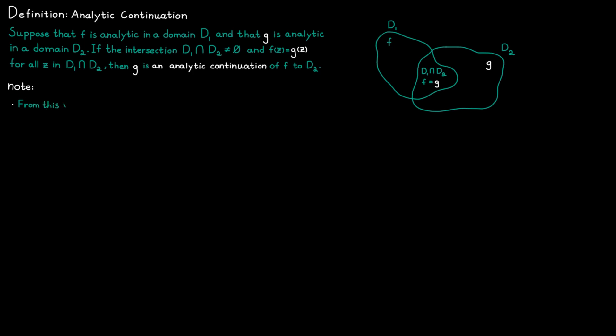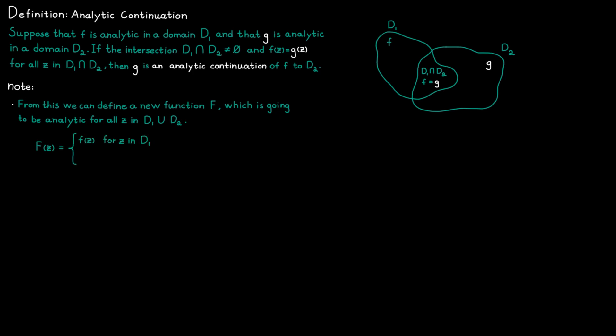This is significant because we can create a new function, capital F, which is analytic inside both domains. We let capital F equal f in domain D1, and equal G in domain D2. We have therefore created a new function that is an extension of the original, and it is always going to be analytic in both domains thanks to analytic continuation.